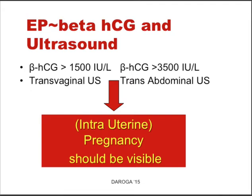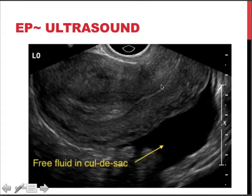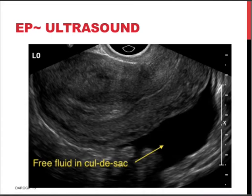Here is a transvaginal ultrasound scan. We can see the uterus, the uterine cavity, the endocervix — and the uterine cavity is empty with no clear gestational sac visible. The arrow points at fluid in the pouch of Douglas. This fluid could be from a ruptured corpus luteum. It's not obviously blood, because blood would appear more grayish and in a dynamic picture would give a swirly appearance.